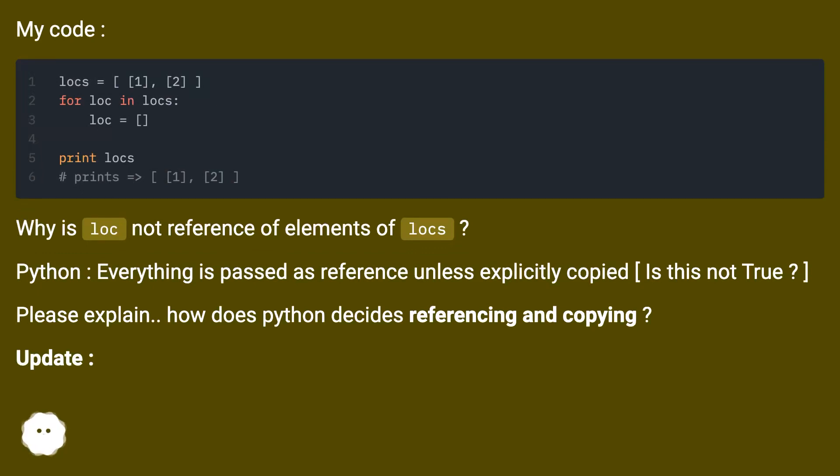Everything is passed as reference unless explicitly copied. Is this not true? Please explain. How does Python decide referencing and copying?